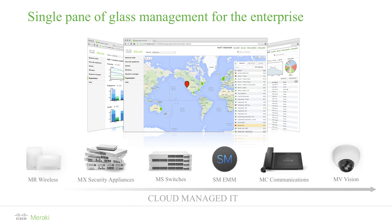Cisco Meraki offers six products to the market as of May 2017. Starting with our wireless MR solution, then we expanded to our security appliances, and then we released our switches. Then we introduced our system manager — the mobile device management to manage endpoints. And then we released recently our phones and our security cameras. The most important thing here to cover is the dashboard. That's where we actually manage all these six products from.